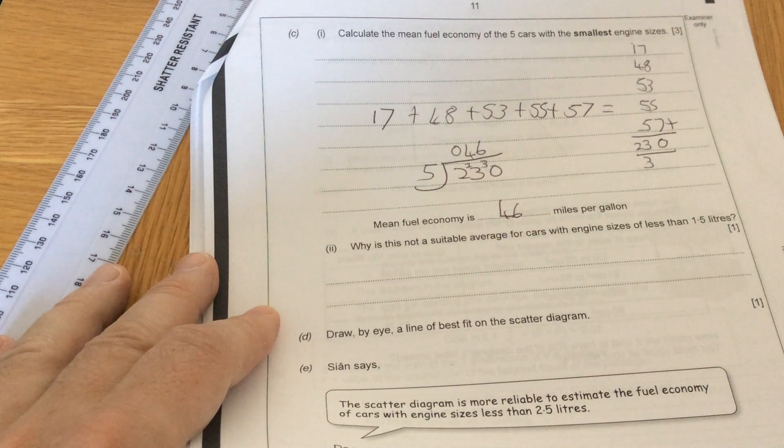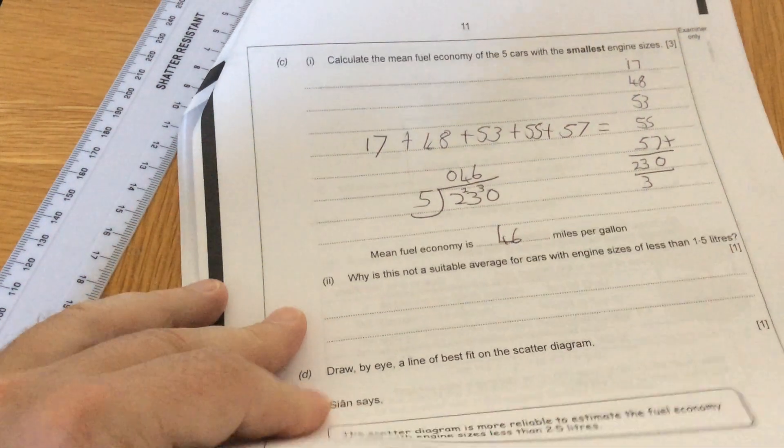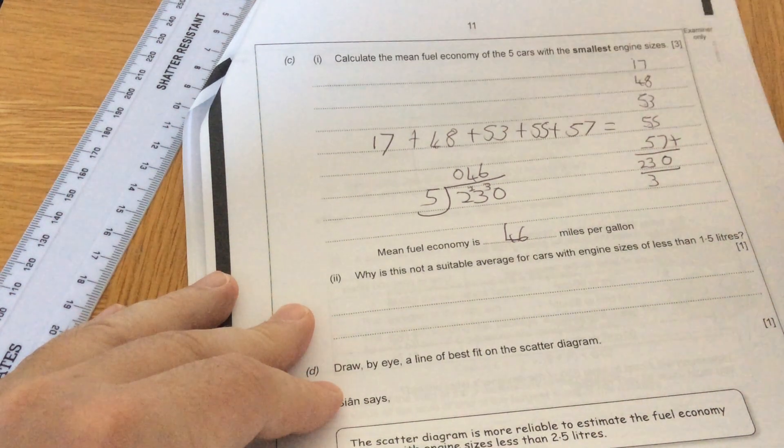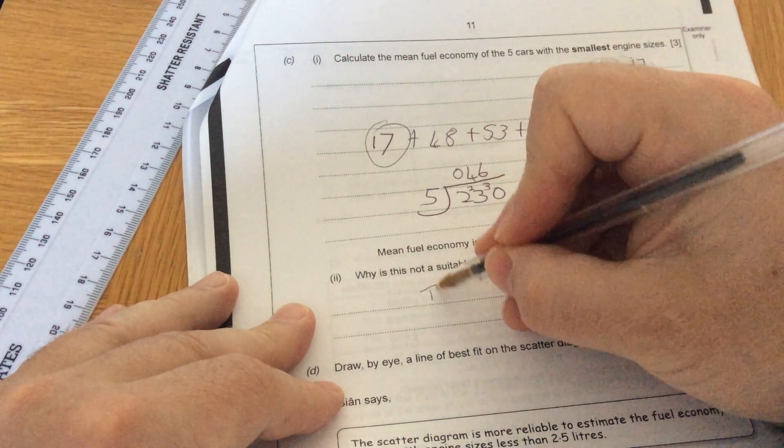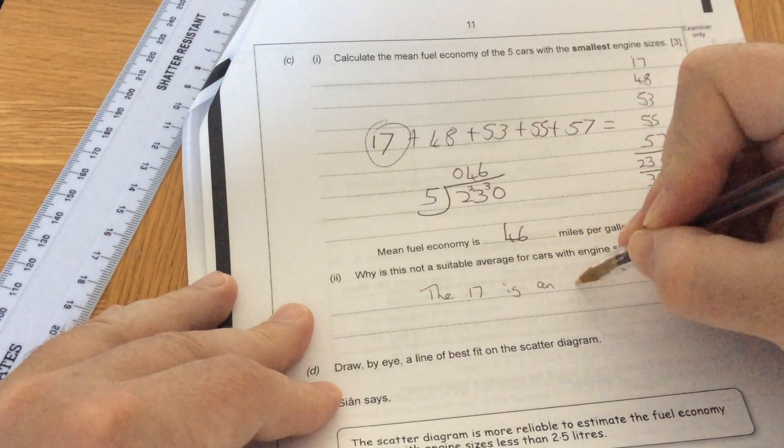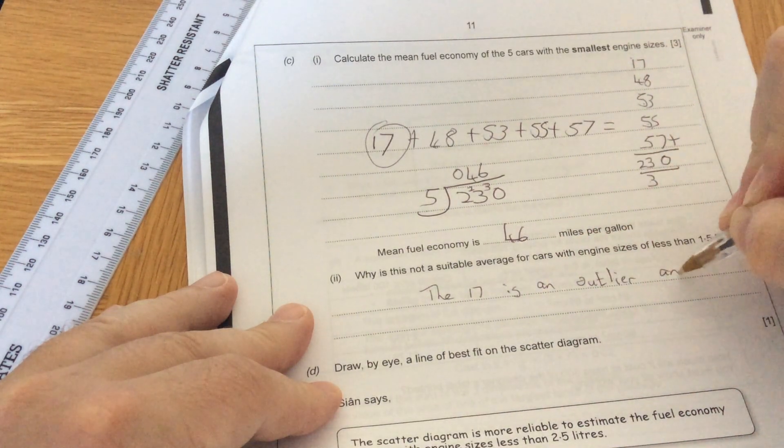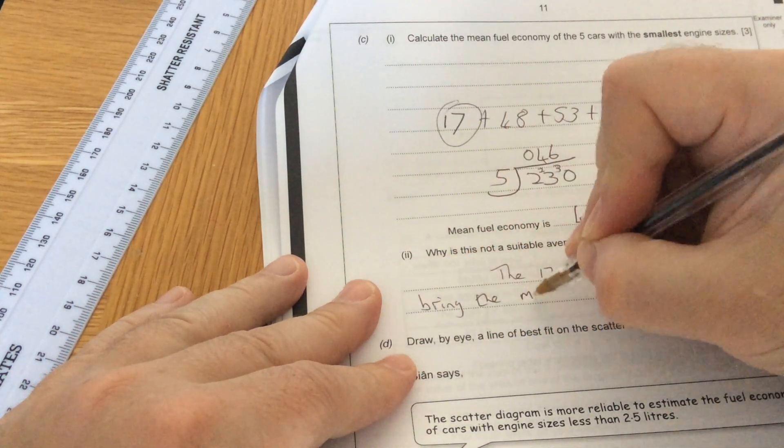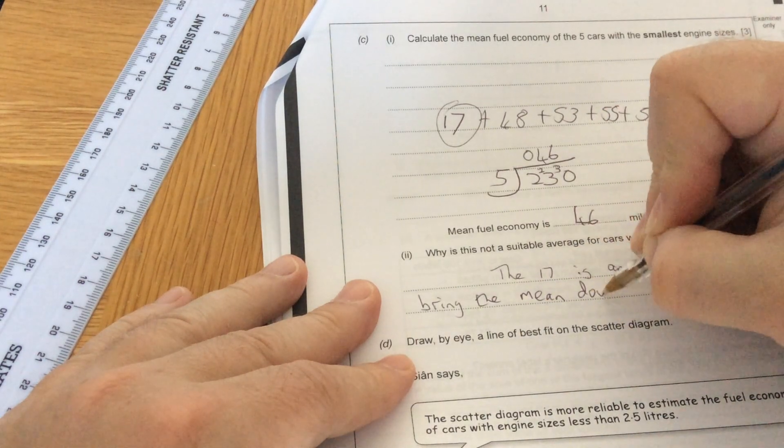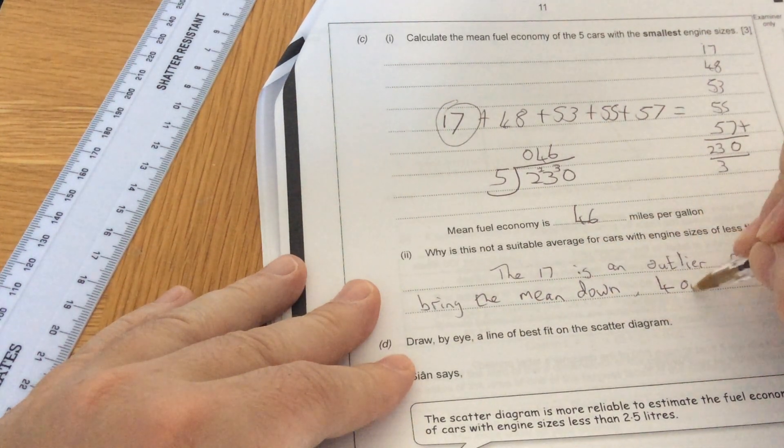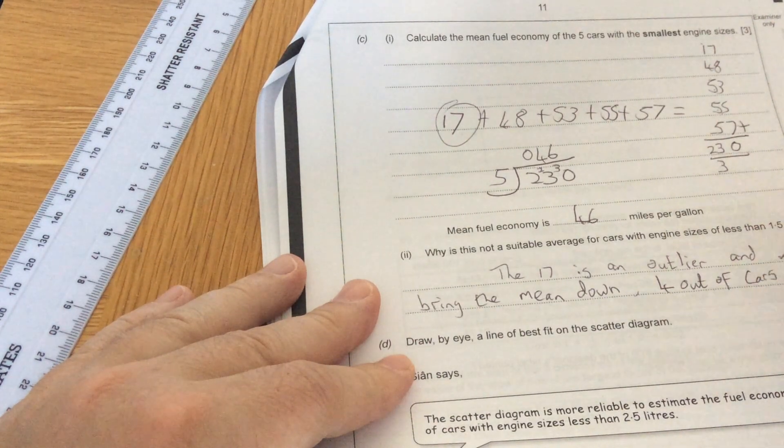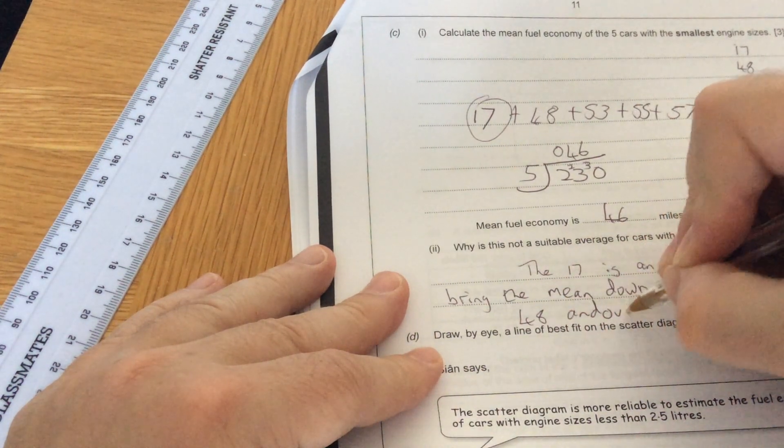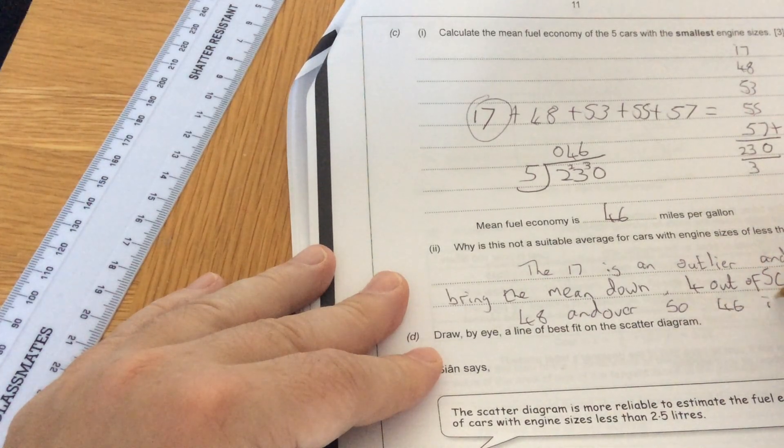Why is this not a suitable average for cars with engine sizes of less than 1.5 litres? Because if we look at this, most of them are between 48 and 57. So the 17 is an outlier and will bring the mean down. You could also say 4 out of 5 cars are 48 and over, so 46 is too low.